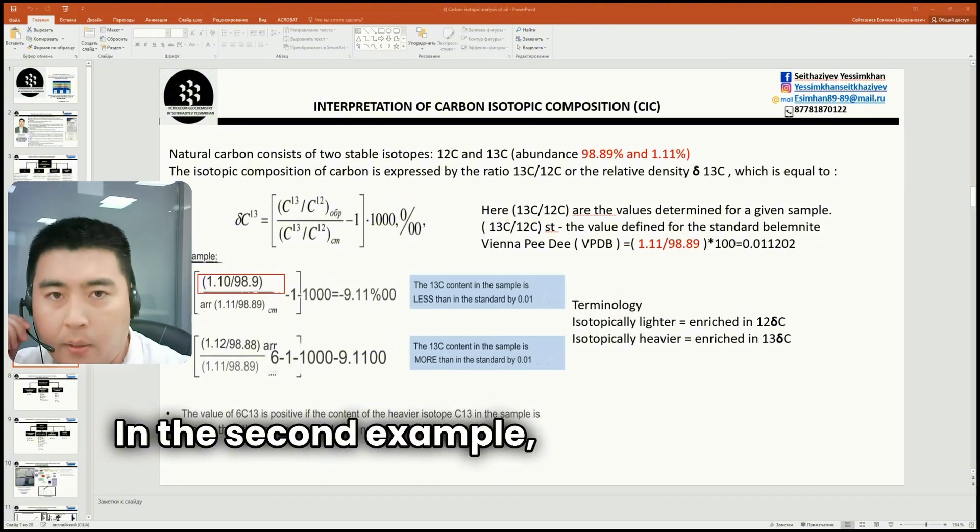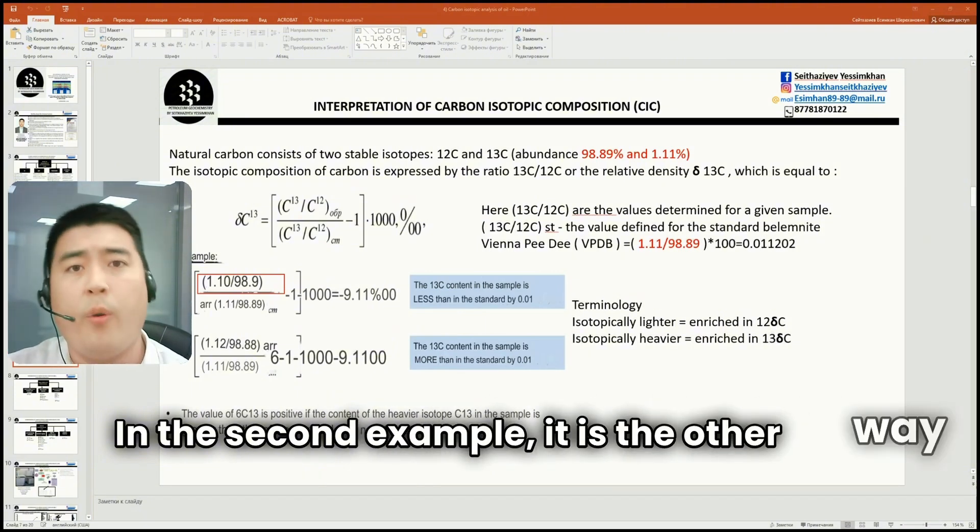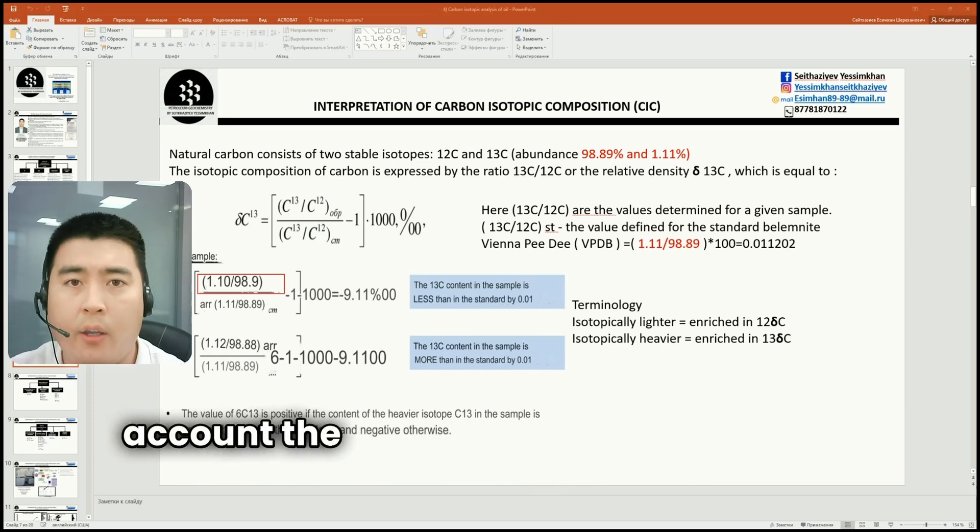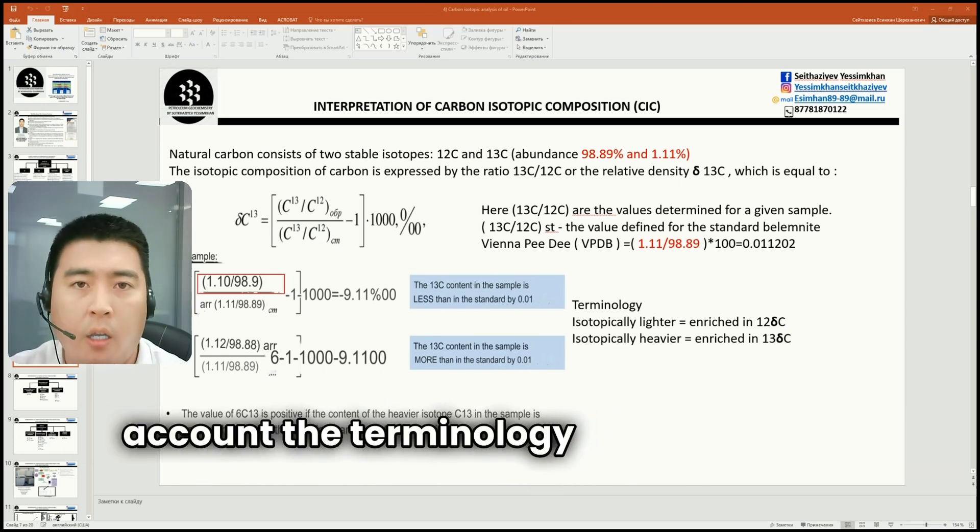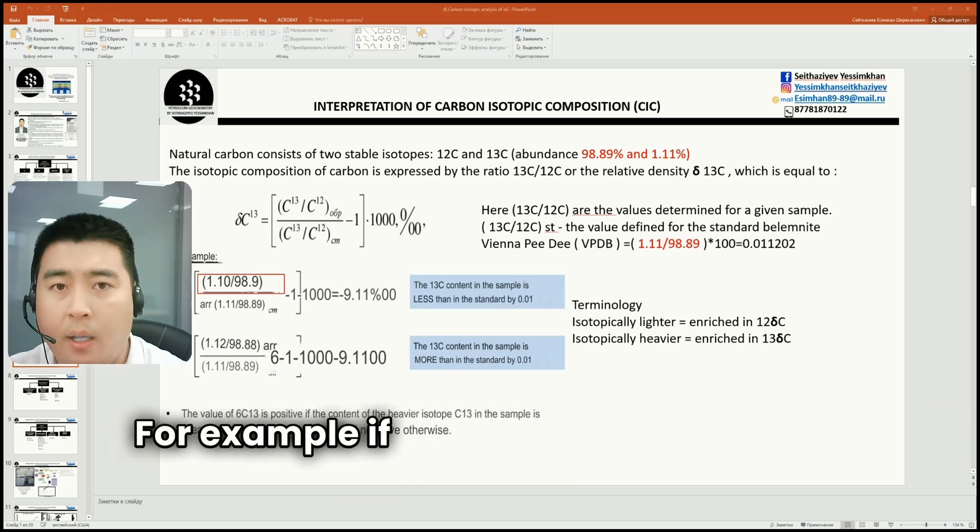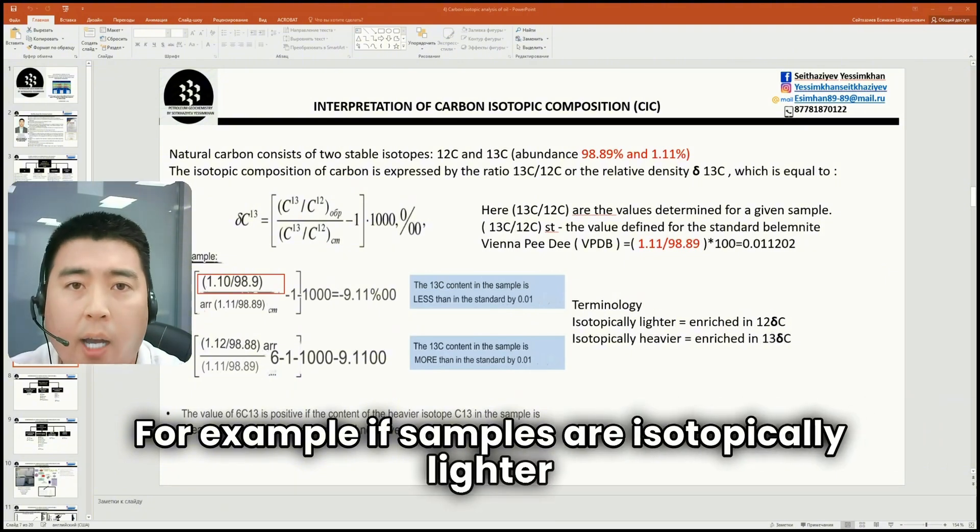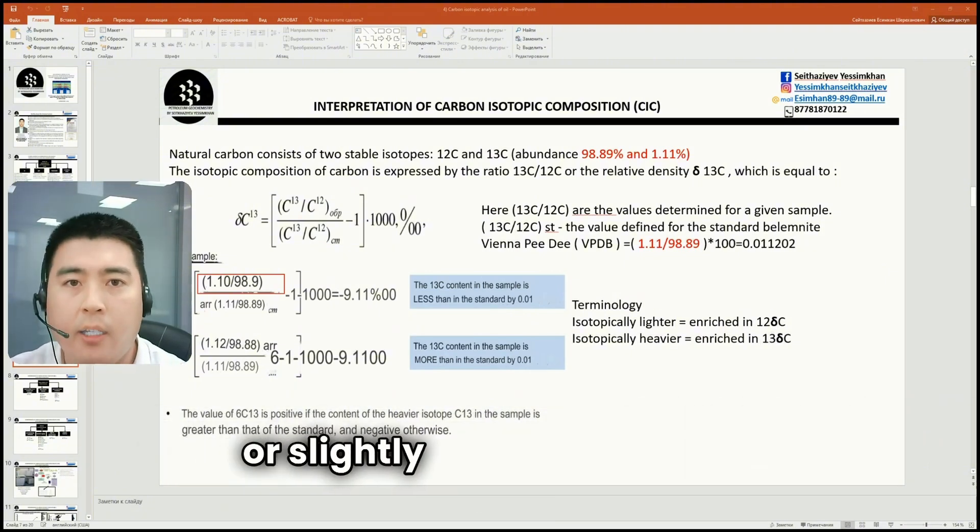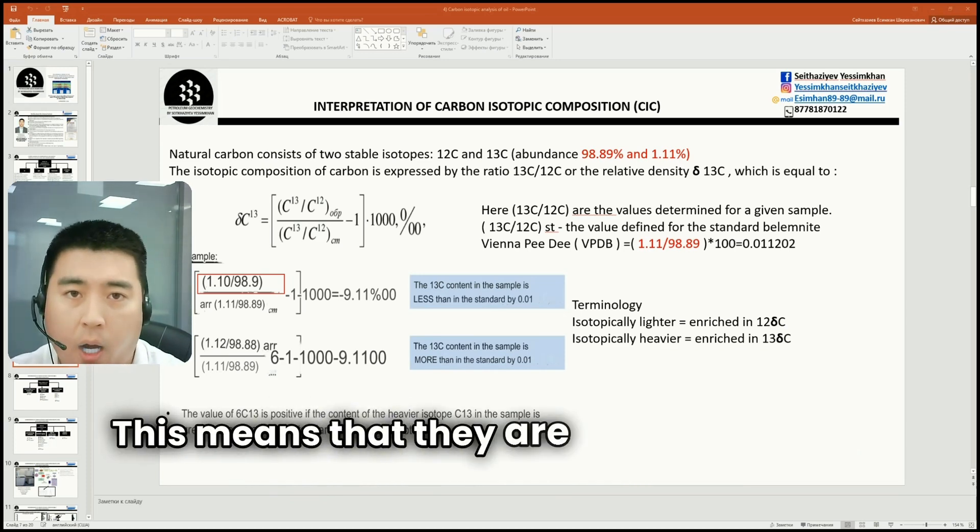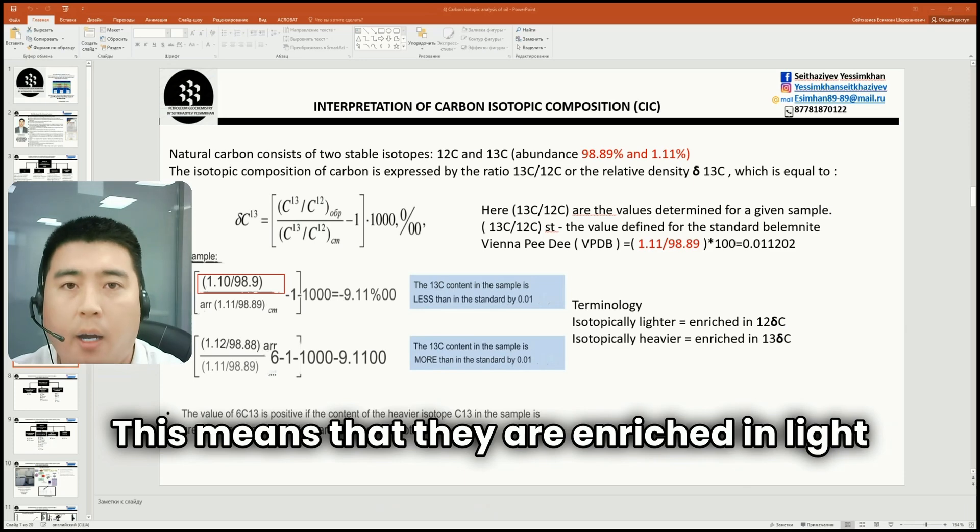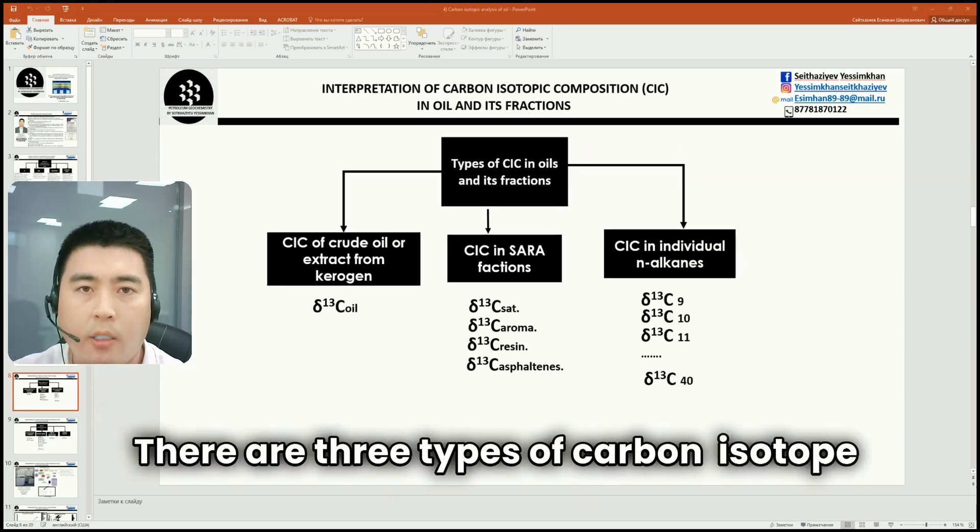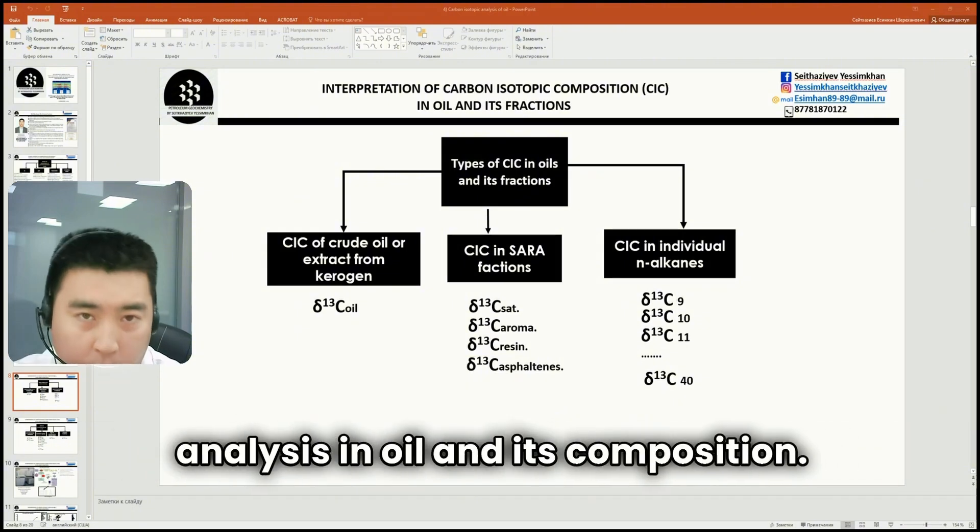In the second example, it is the other way around. It is also necessary to take into account the terminology used in isotope geochemistry. For example, if the samples are isotopically lighter or slightly enriched in 13C, this means that they are enriched in light isotopes.